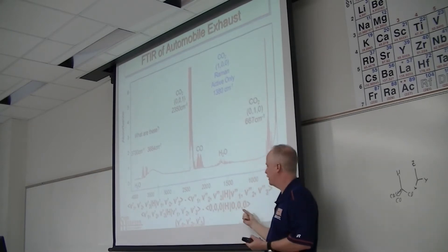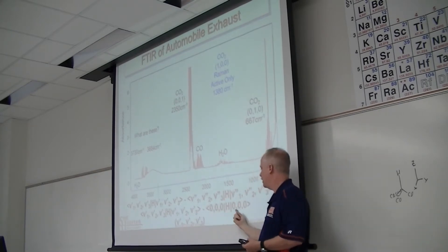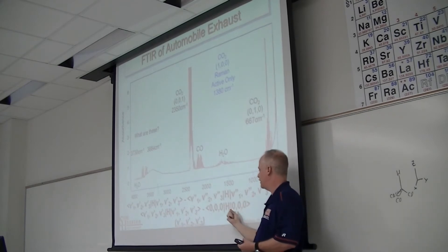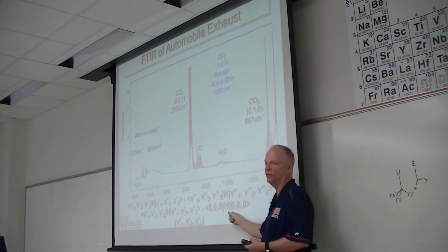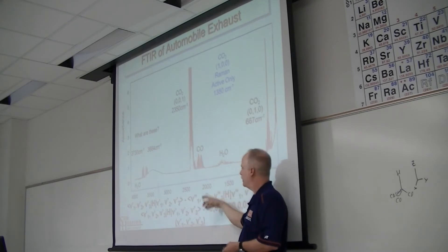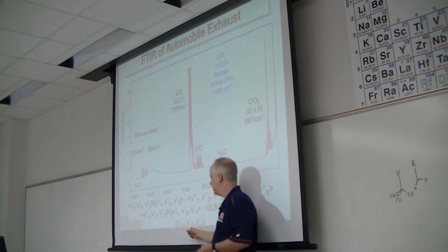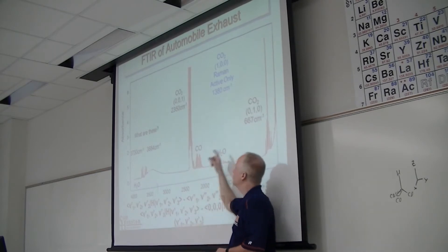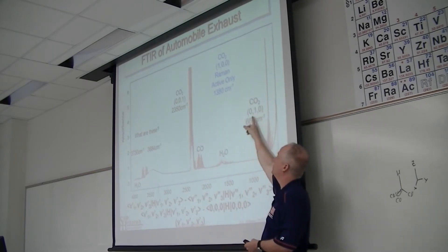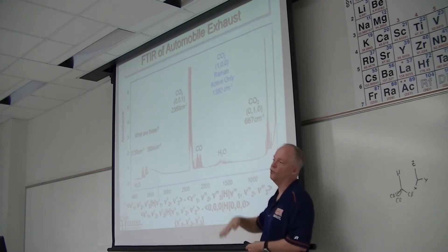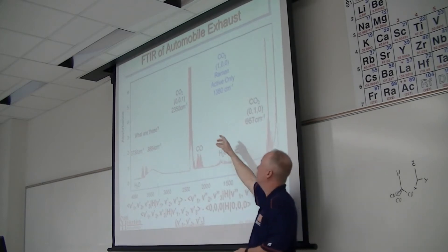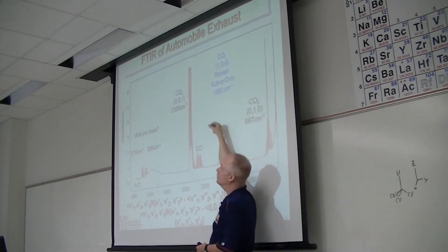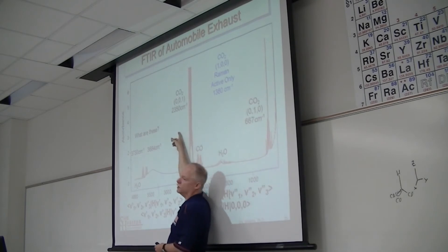Since these are fundamentals, all of these lower vibrational states have a quantum number of zero, zero, and zero. When we're labeling these, all we have to do is label them with the destination — where they went. So we're labeling this one zero, one, zero — it started at zero, zero, zero and went to zero, one, zero. We label this one with its destination one, zero, zero; and that one zero, zero, one.